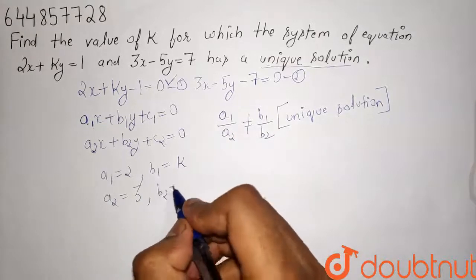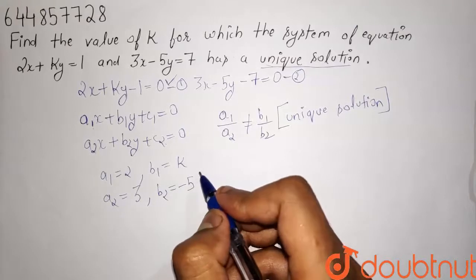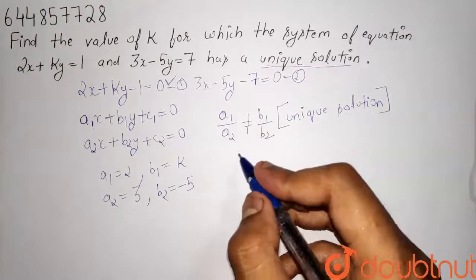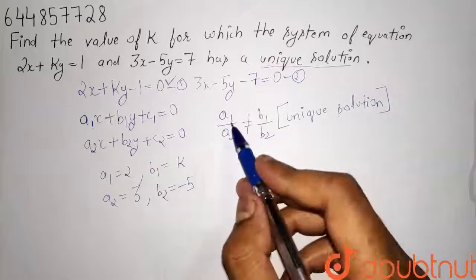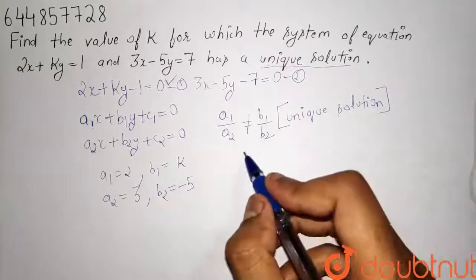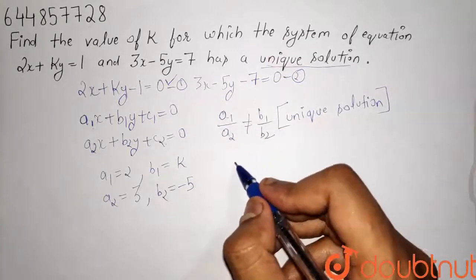b2 is equal to minus 5. Putting the value of a1, a2 and b1, b2 in the formula,